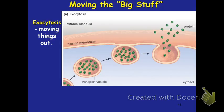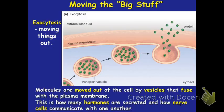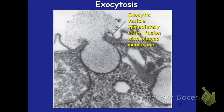In addition to moving things across the membrane from low to high, sometimes we have to move big stuff or lots of things at once — and these are moved in vesicles. The Golgi apparatus is the organelle that makes these vesicles to be shipped out. If something is leaving the cell, it leaves through exocytosis. The vesicles move through the cell and fuse with the cell membrane, and the contents are released out of the cell. This is how hormones are secreted and how our nerve cells communicate with one another. Here's an example of exocytosis under a microscope — you can see the vesicle has fused with the membrane and material is being released out of the cell.